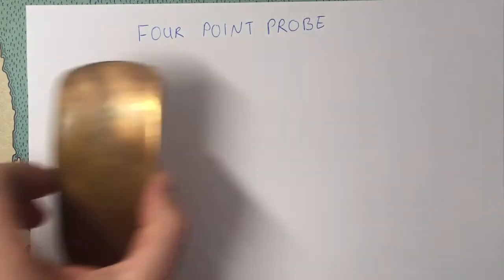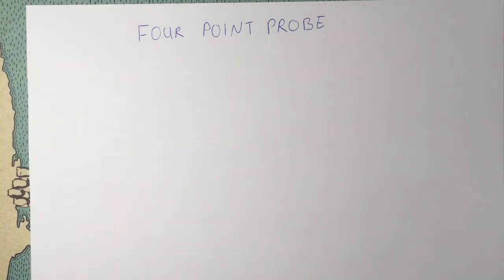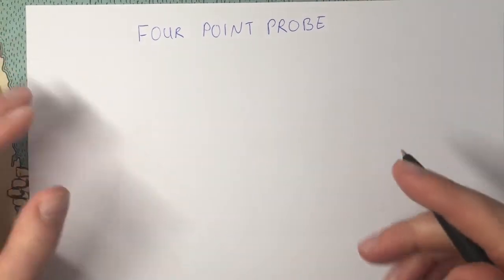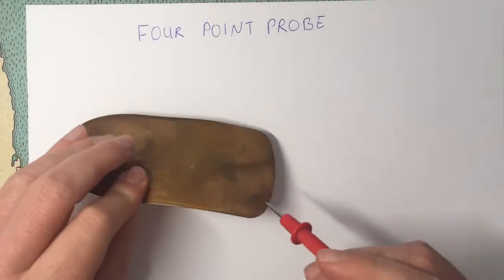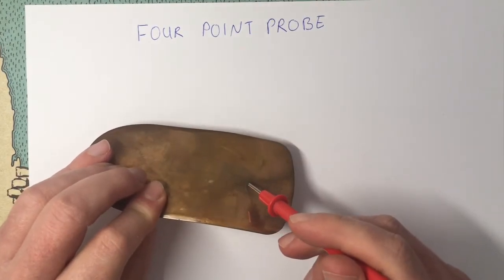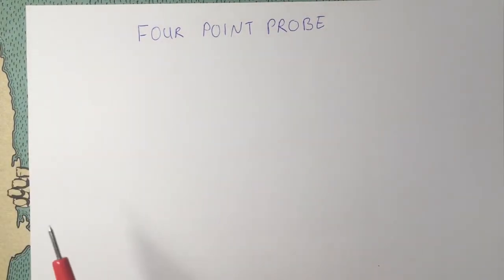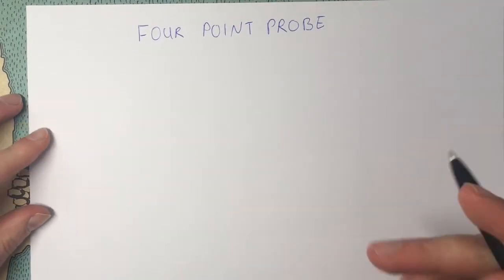So we've got this contact resistance that we get between our probe and our piece of metal, and it's not reproducible in the magnitude of that resistance.